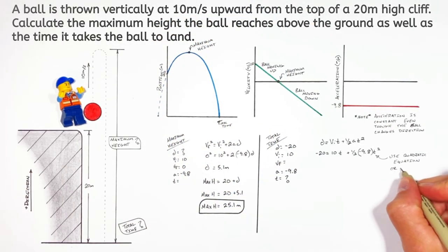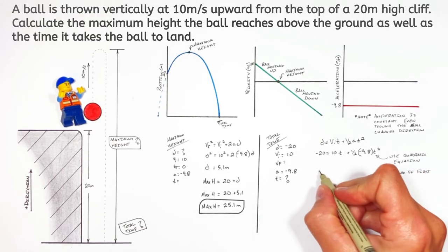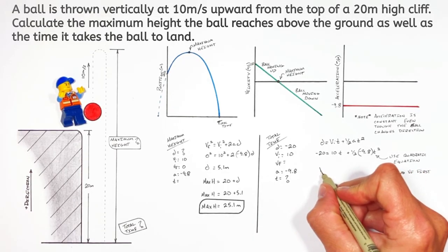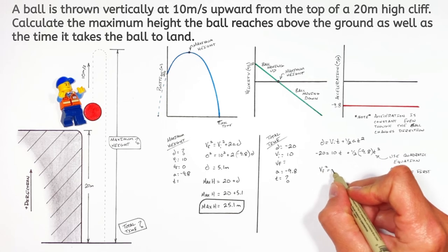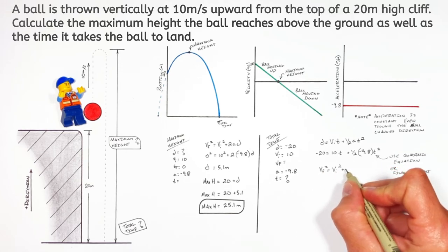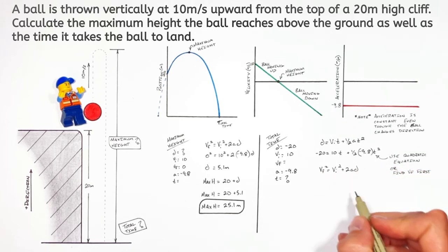Now the reality is, I don't want to deal with the quadratic equation at all. And here's the trick. Anytime the quadratic equation comes up in kinematics, you can always get around using it by solving for the other unknown variable first. Which in this case is the final velocity.